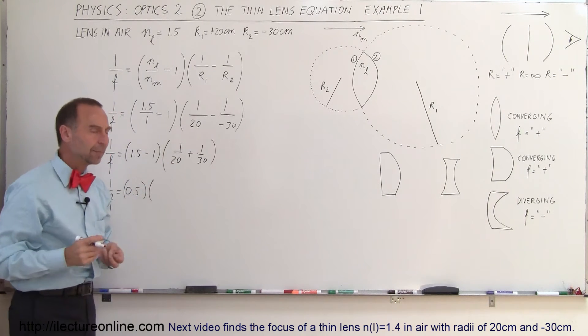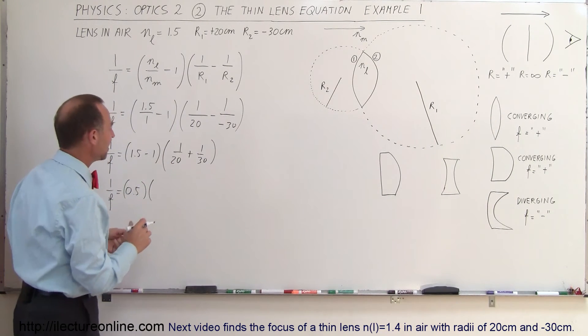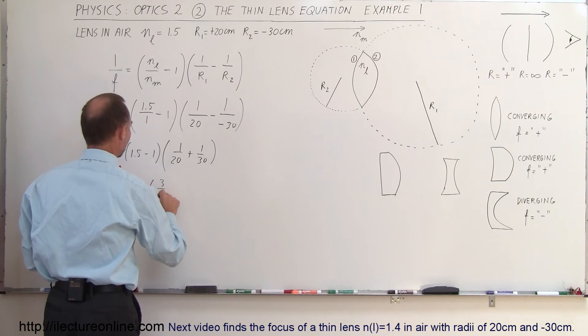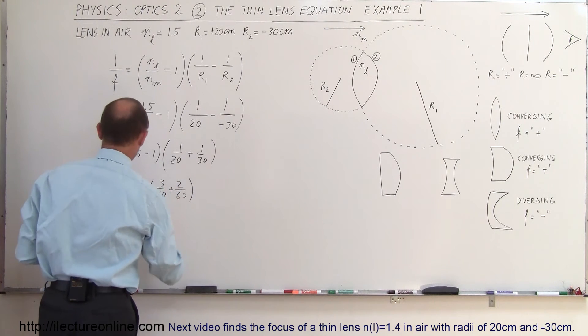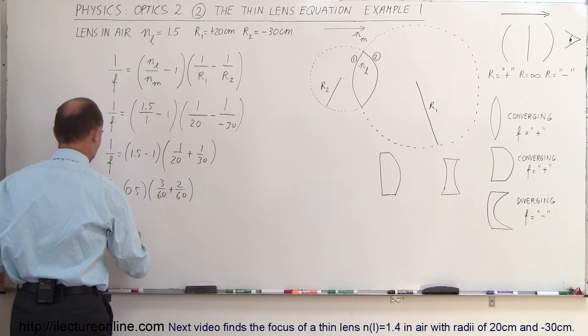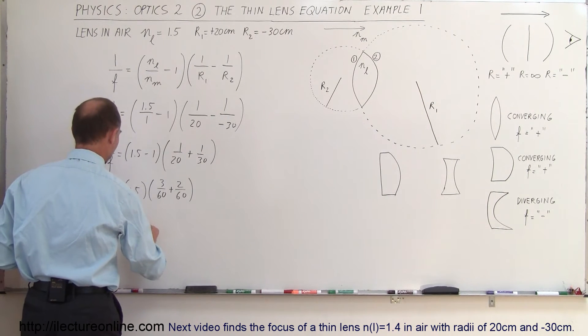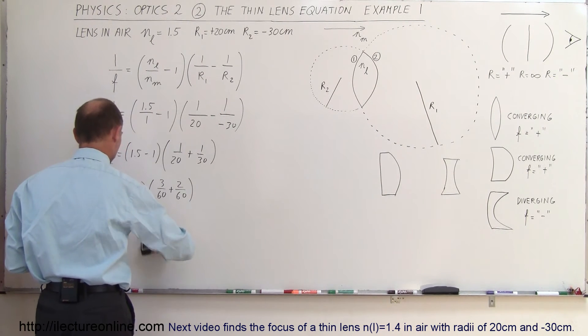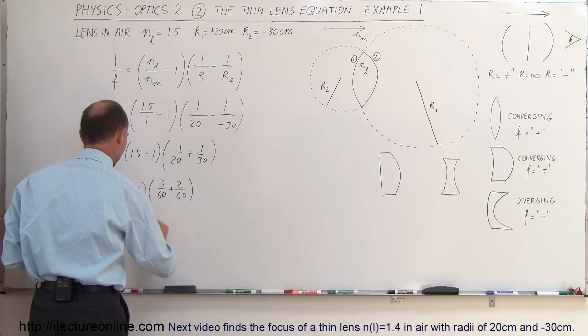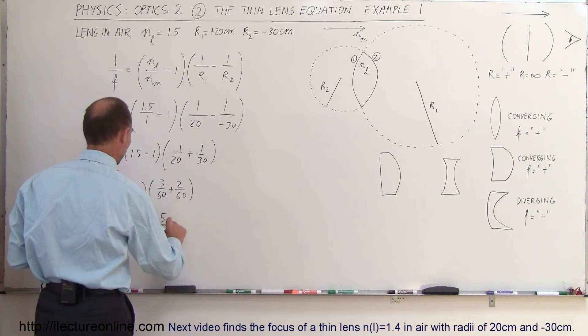We need a common denominator here, which looks like it's 60. That would be 3 over 60 plus 2 over 60. So 1 over f is equal to 0.5 times 5 over 60.